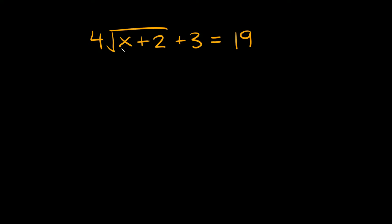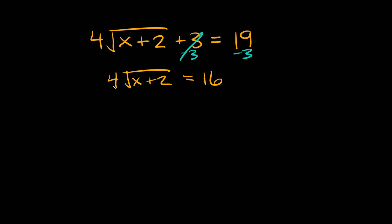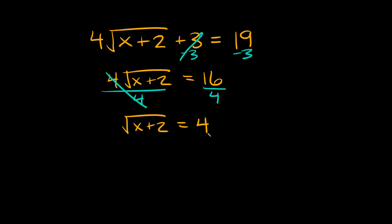Here we have 4 times the square root of x plus 2, plus 3 on the outside, is equal to 19. The first thing we do is subtract 3 from both sides — those cancel out — so we're left with 4 times the square root of x plus 2 is equal to 16. Now to get rid of the 4 I can divide both sides by 4, and then we're left with the square root of x plus 2 is equal to 4.